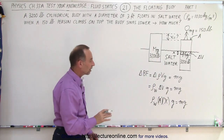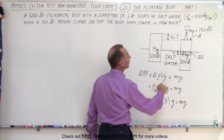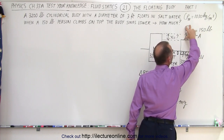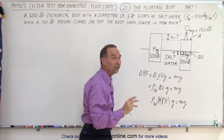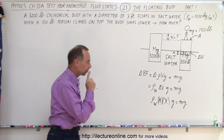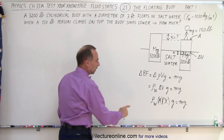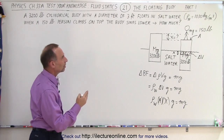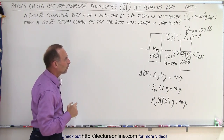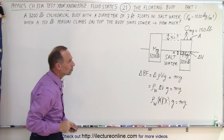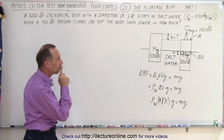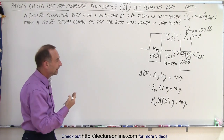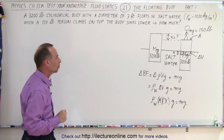Normally we would cancel out the g's, but notice we're given the weight of the person, not the mass of the person, so we'll leave the g there. We're given the density as 1,030 kg per cubic meter, but we're given pounds for the weight of the buoy and weight of the person, so we should convert that density to pounds per cubic foot.